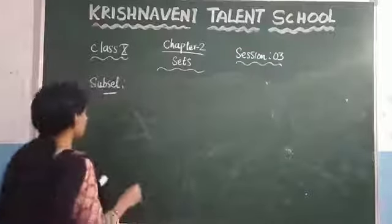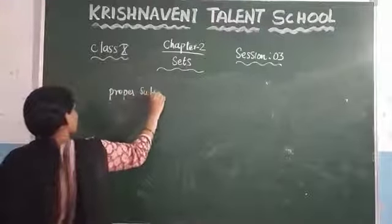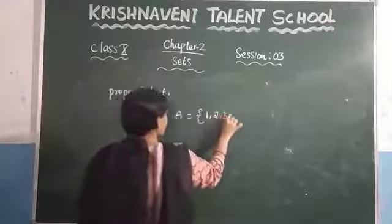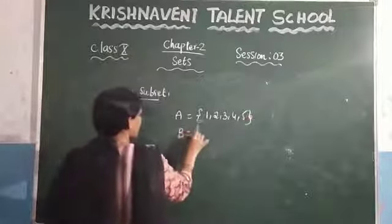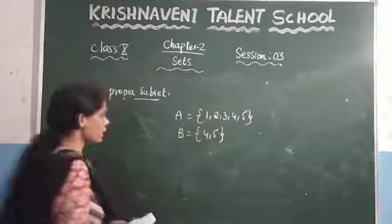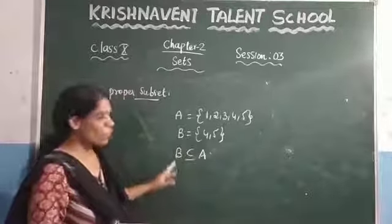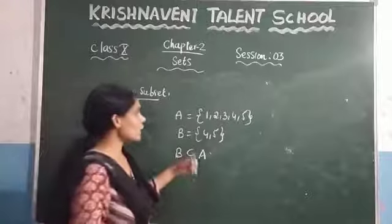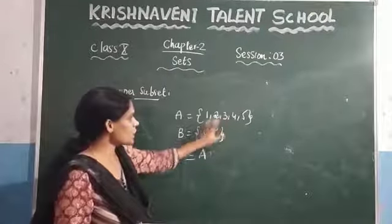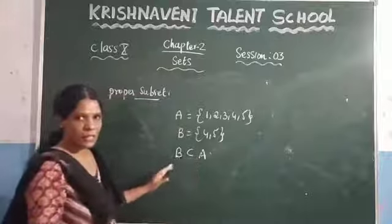Now consider the proper subset. There is a small difference between subset and proper subset. Let A = {1, 2, 3, 4, 5} and B = {4, 5}. Every element of B is present in A, so B is a subset of A. For proper subset, there must be at least one element present in A that does not exist in B — here, 3 is in A but not in B. So B is a proper subset of A.